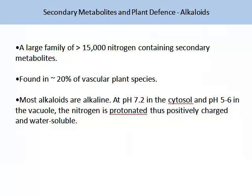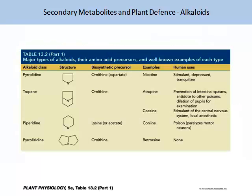The alkaloids are a large family of about 15,000 nitrogen-containing secondary metabolites. They are found in approximately 20% of vascular plant species. Most alkaloids are alkaline. At pH 7.2 in the cytosol and pH 5–6 in the vacuole, the nitrogen is protonated, thus positively charged and water-soluble. The table on your screen from the Plant Physiology recommended textbook lists major types of alkaloids, their amino acid precursors, and some well-known examples — for instance, nicotine, which is a stimulant, depressant, and tranquiliser, is part of the alkaloid group pyrrolidine.